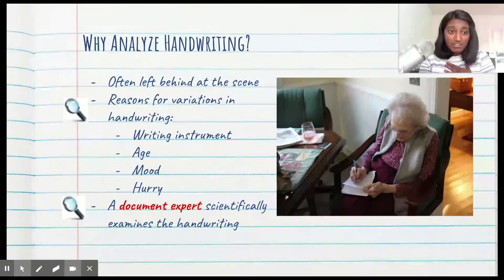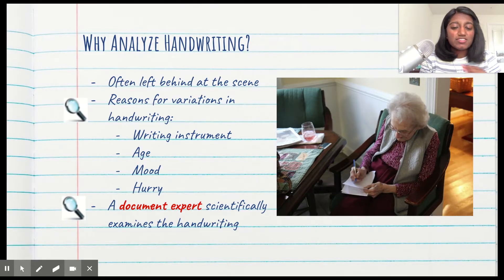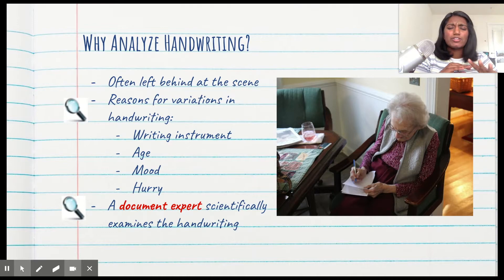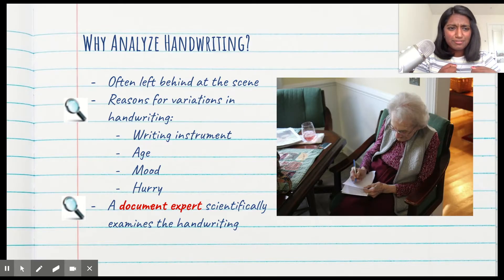There's a couple different reasons for variation. First of all, there's the writing instrument. For example, when I write in pen versus pencil, my pen handwriting is so much messier than my pencil handwriting. The same thing can be said for maybe when you write with a pencil versus a crayon. It's completely different.